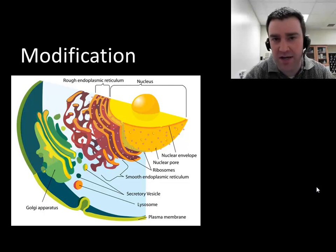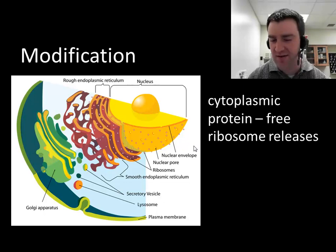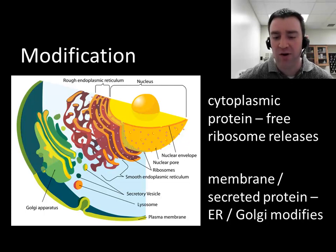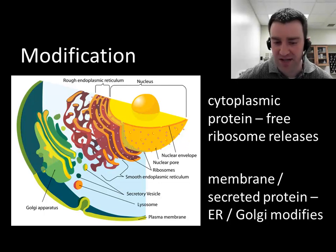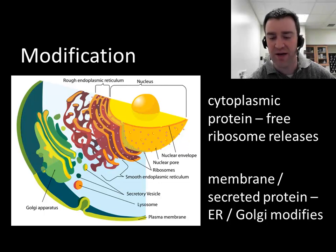Last but not least, sometimes in eukaryotes additional modifications occur to the protein. If a protein is destined to be cytoplasmic, the ribosome just releases it. But if a protein is destined to end up in the membrane or be secreted, the ribosome releases it into the endoplasmic reticulum for modification, and then the protein also travels to the Golgi for final modification.